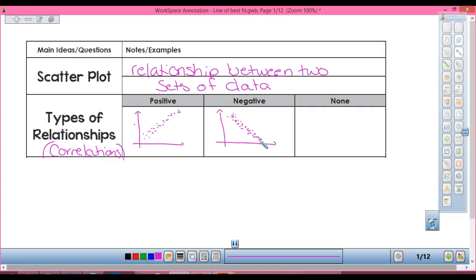And if it doesn't have a correlation, they're kind of spread all over the place. So you can't tell if it's positive or negative.